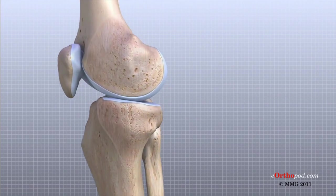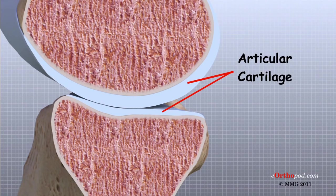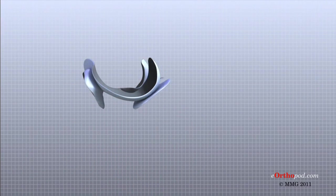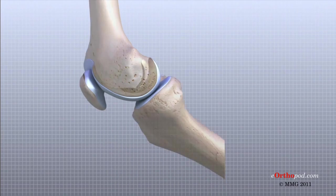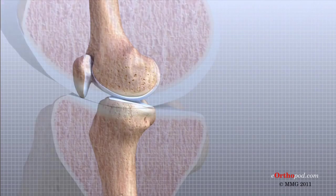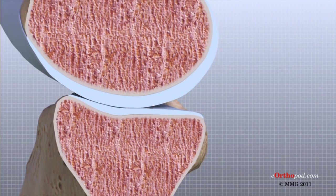Articular cartilage is the material that covers the ends of the bones of any joint. This material is about one quarter of an inch thick in most large joints. It is white and shiny with a rubbery consistency. Articular cartilage is a slippery substance that allows the surfaces to slide against one another without damage to either surface. Its function is to absorb shock and provide an extremely smooth surface to facilitate motion. In the knee, articular cartilage covers the ends of the femur, the top of the tibia, and the back of the patella.